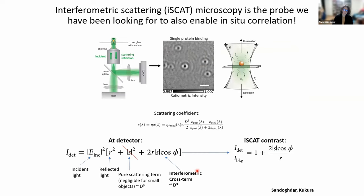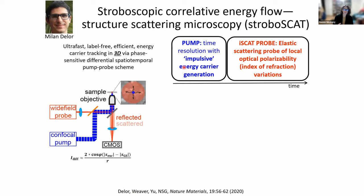ISCAT was something that really motivated us to pursue this work and to develop this form of energy flow imaging. Instead of following the behavior of individual particles in the material, we're basically trying to do the same thing with quasi-particles by first photoexciting and then using ISCAT as a probe. Because of that, we call this technique StroboSCAT — something that Milan Delors, a former postdoc, developed while in my lab. He's now on the faculty at Columbia doing very interesting work with exotic quasi-particles.